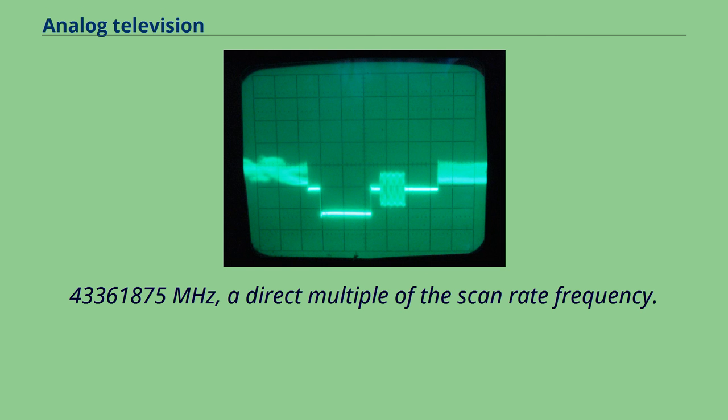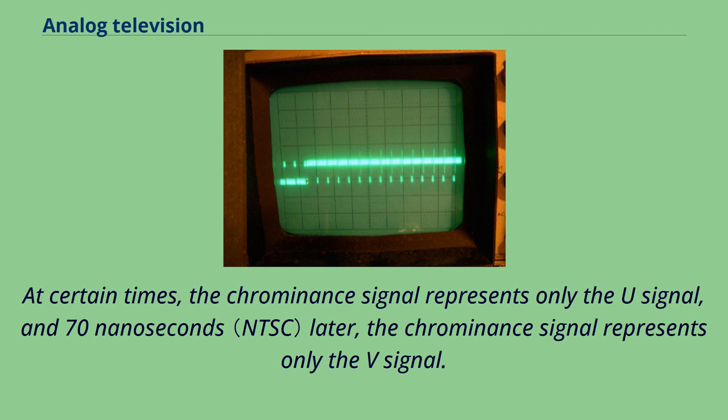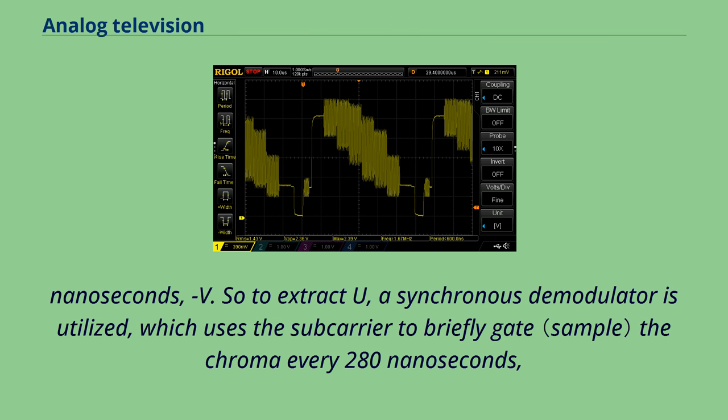At certain times, the chrominance signal represents only the U signal, and 70 ns later, the chrominance signal represents only the V signal. So to extract U, a synchronous demodulator is utilized, which uses the subcarrier to briefly gate the chroma every 280 ns, so that the output is only a train of discrete pulses, each having an amplitude that is the same as the original U signal at the corresponding time. The pulses are then low-pass filtered so that the original analog continuous time U signal is recovered.